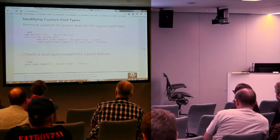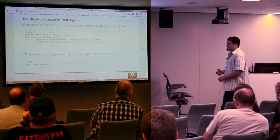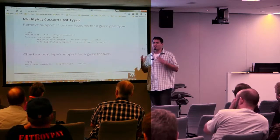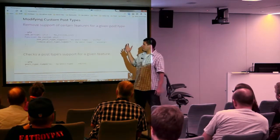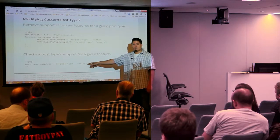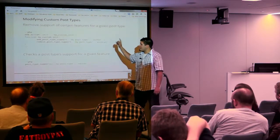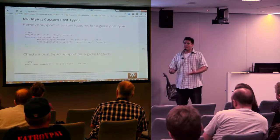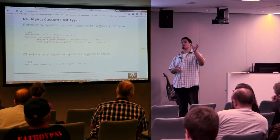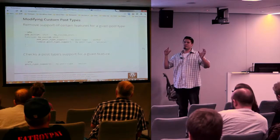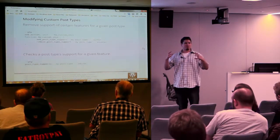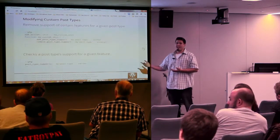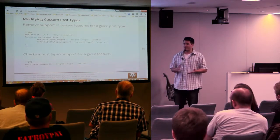You can also modify custom post types. My call-to-action plugin doesn't have featured image functionality out of the box, but I can check if it has that functionality, and if it doesn't, add it in myself. This is stuff you normally do when creating the custom post type — you declare what it supports: the editor, the author, featured image, revisions, everything you want the user interface to have. After the fact, other plugins can manipulate that.